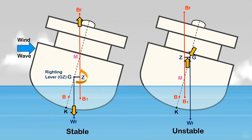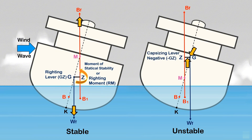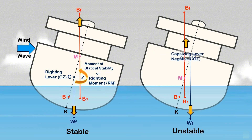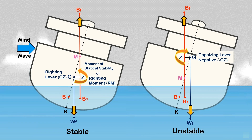This moment is called the moment of statical stability, known as the righting moment. In unstable conditions, when the ship is heeled at some angle, a capsizing lever is created at the high side of the ship. The weight force acts vertically downward through the center of gravity at the low side, while the buoyancy force acts vertically upward at the high side through the center of buoyancy, creating a moment that will tend to heel the ship further. This moment is called a capsizing moment.